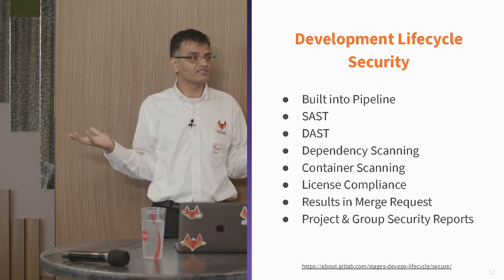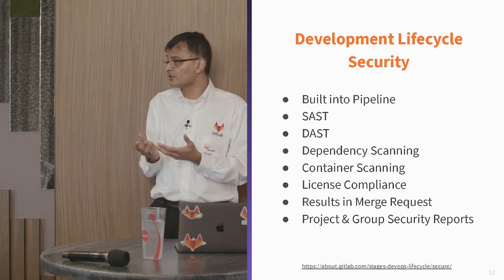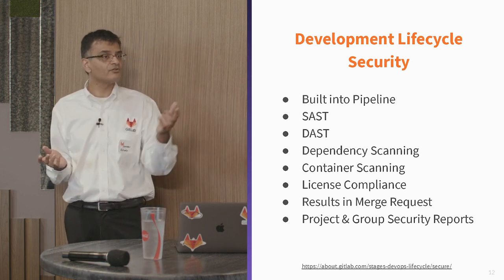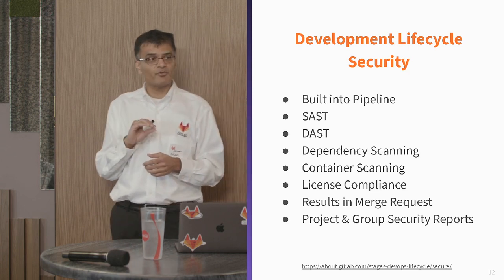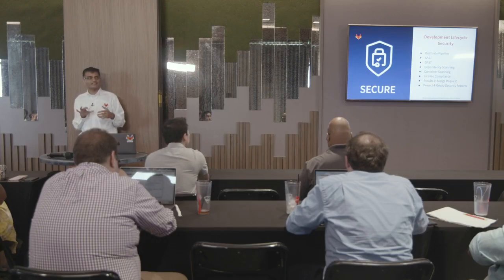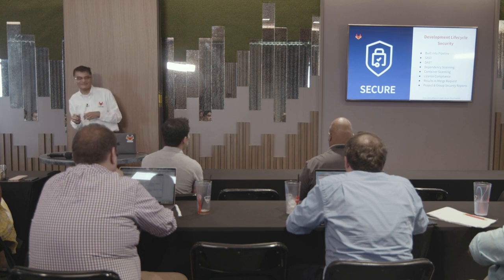Container scanning — containerization is like baked into GitLab. We have a container registry and we can run a container scan. Very much like Twistlock; we use Clair. License compliance — how many of you use open source libraries in your code bases? License compliance will tell you what kind of open source license that library is under and whether you have blacklisted or whitelisted it at an organizational level. Some organizations cannot digest certain open source licensing terms because those terms are restrictive. The results show up in merge requests, and we have group and project security reports.